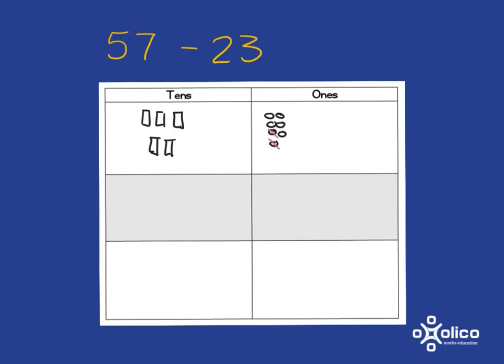And then if you need to take away 23, it's taking away three ones and two tens for the taking away the 20 of the 23. And so they should be able to see that what they are left with is three tens and four ones, and so their answer is 34.